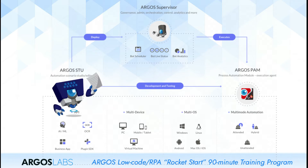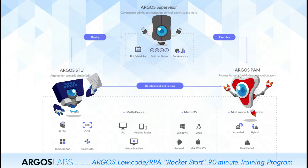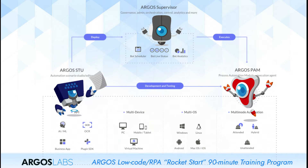Again, they are Argos Stu, Argos Pam, and the Argos supervisor. Using the Argos Stu software, you build your automation scenarios. And then, once the automation scenario is built, you give it to Argos Pam.